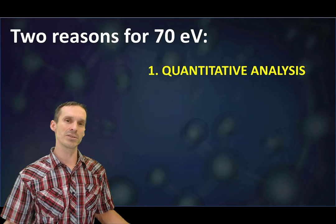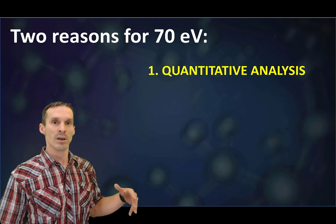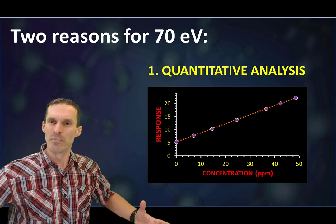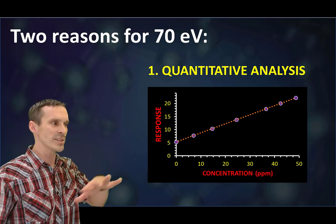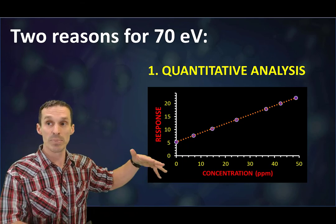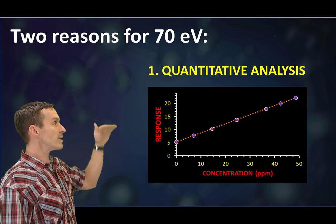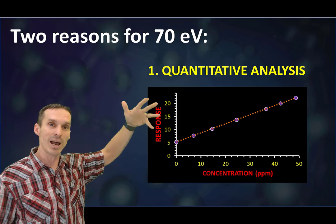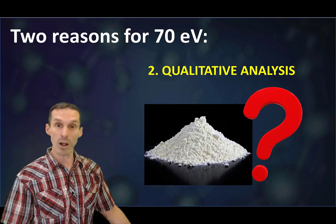To really get down to it, there are two reasons that we want to pick that specific voltage. One is for quantitative analysis. Not only do we want to get the most ionization that we can get, but we want it to be consistent as well. We don't want the sample signals to change because of our mass spectrometer. We want it to change with concentration. By picking 70 electron volts, things are pretty stable at that range. It's a nice plateau on the top of the curve.